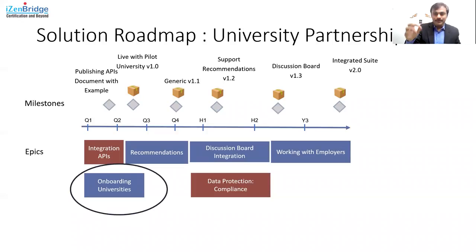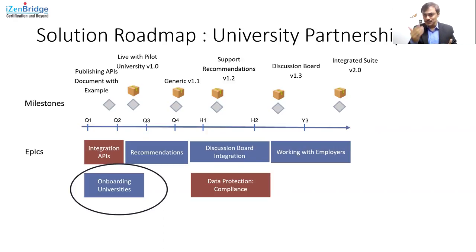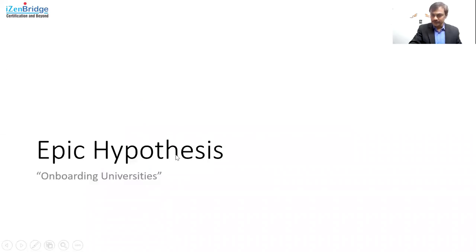I'll use some slides to remind you about the roadmap. We need to achieve the roadmap of providing a solution for student loans. For that, we have a first EPIC which I am focusing on — Onboarding Universities. It's not necessarily first in sequence, because you might already be working on some enabler EPICs. So let's look into the details of Onboarding Universities.